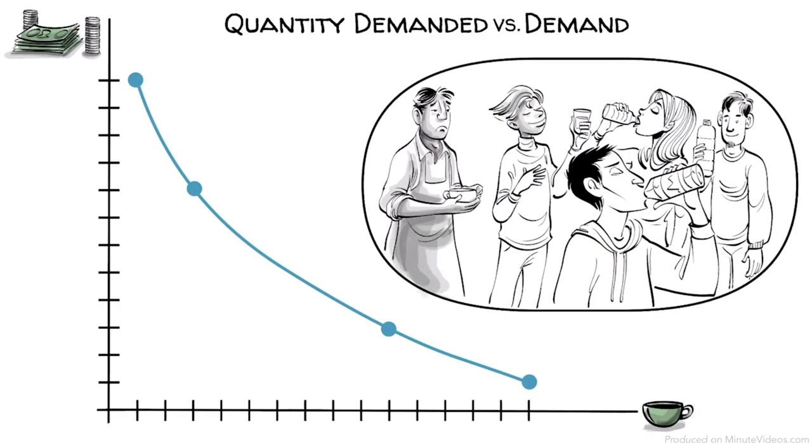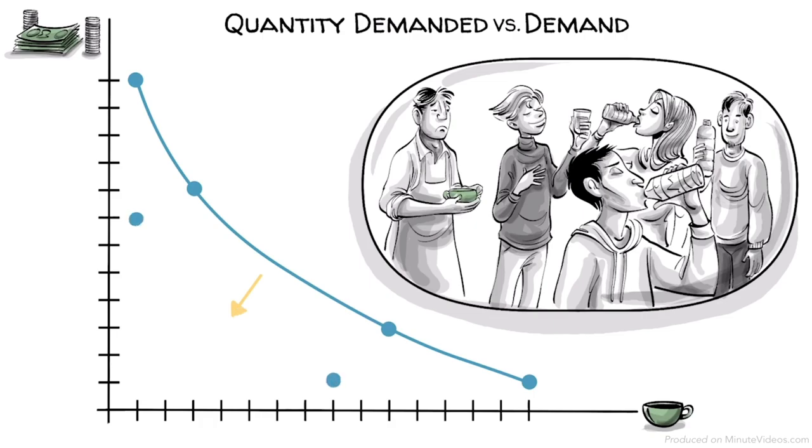Let's imagine that many people in the market become more health conscious and think that coffee is bad. If that happens, the entire demand curve shifts downward. And at $3, not 100 buy coffee, but just 40.